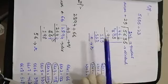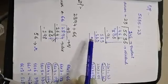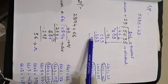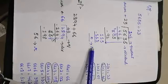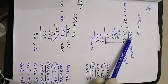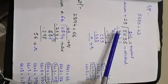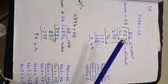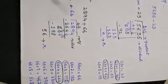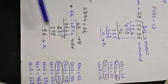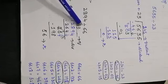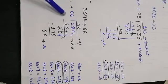23 fives are 115: 5 minus 5 is 0, 1 minus 1 is 0, and 1 minus 1 is also 0. The remainder is 0. So 23 multiplied by 245 plus 0 equals 5635. This question is solved. Now let's consider another example with a remainder: 2894 divided by 66. So 66 is the divisor and 2894 is the dividend.